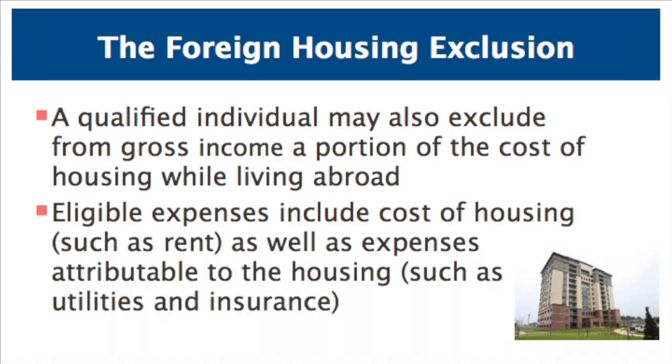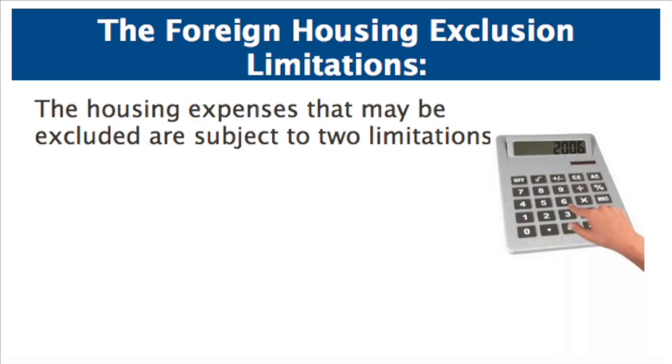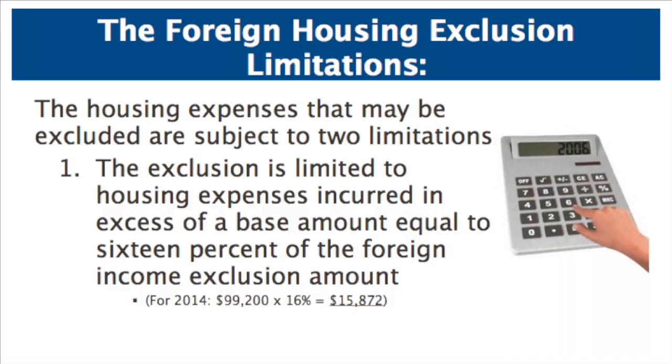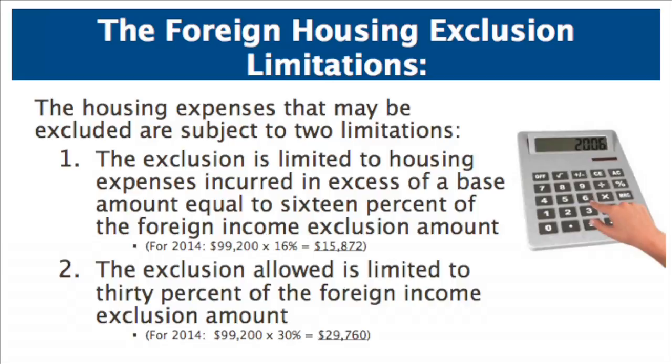In addition to the exclusion of foreign earned income, under United States tax law a qualified individual may also exclude from gross income an amount equal to a portion of their housing costs while living in the foreign country — the foreign housing exclusion. Costs that may be excluded include expenses such as rent, utilities, and insurance. The exclusion for housing expenses is subject to two important limitations. First, the taxpayer's housing expenses that qualify are limited to the portion above a base amount, which is 16% of the foreign income exclusion amount — for 2014, that base amount was $15,872. Second, the taxpayer's exclusion for housing expenses may not exceed 30% of the foreign income exclusion amount — for 2014, that second limit was $29,760.